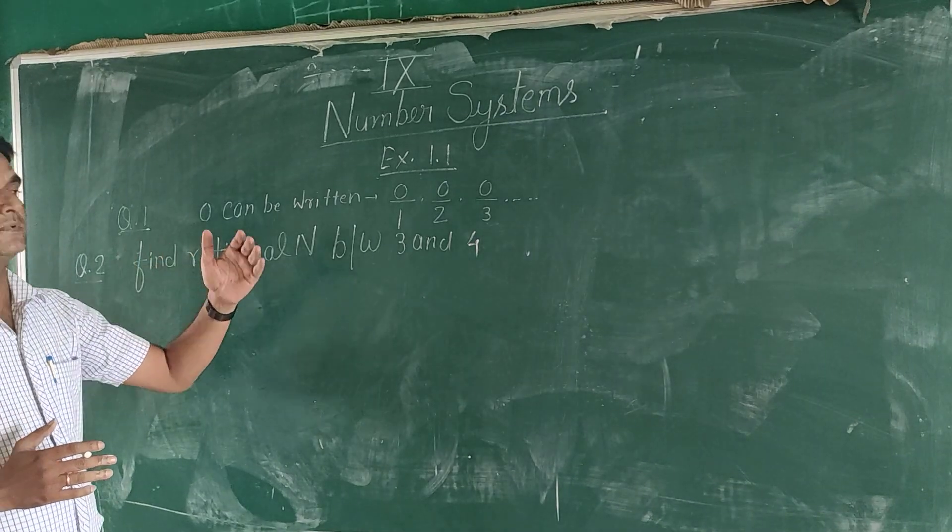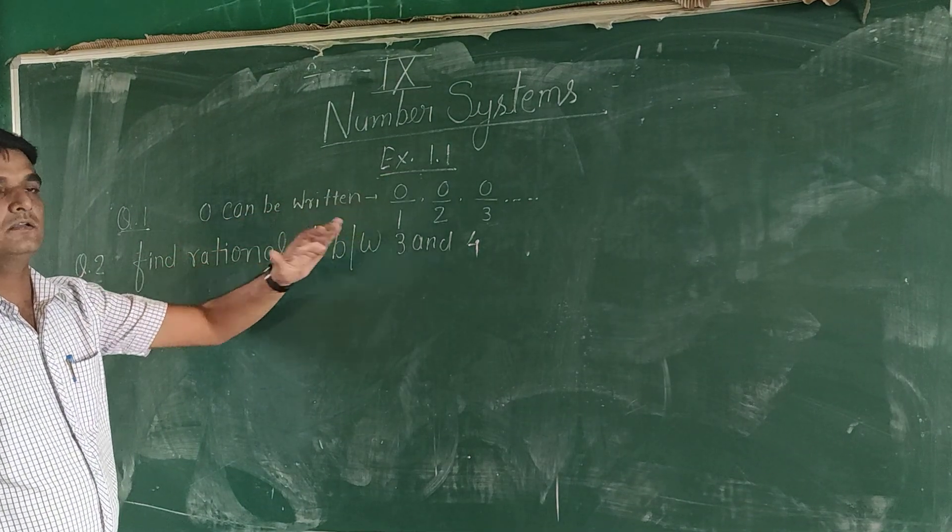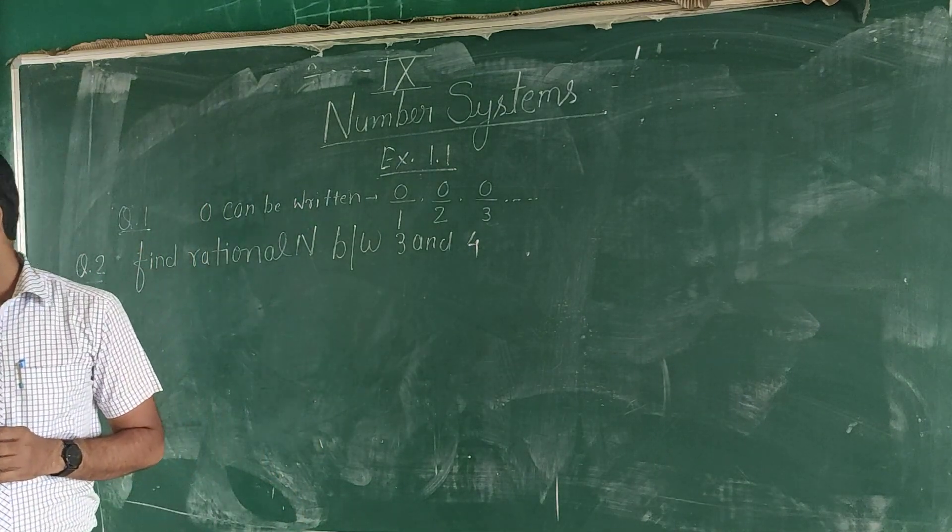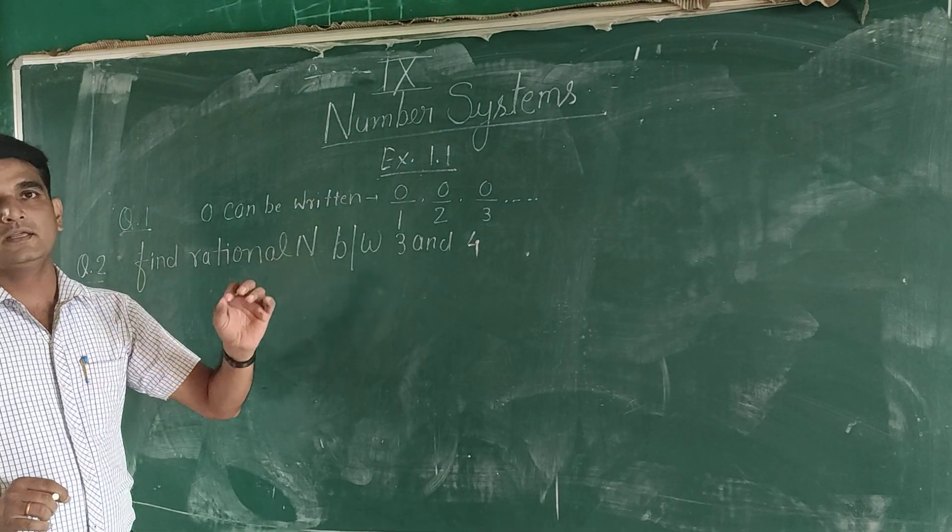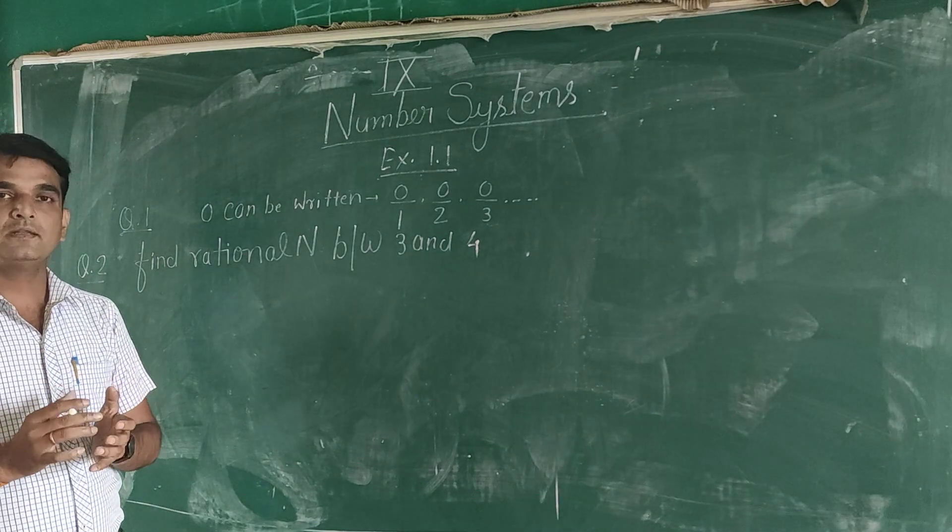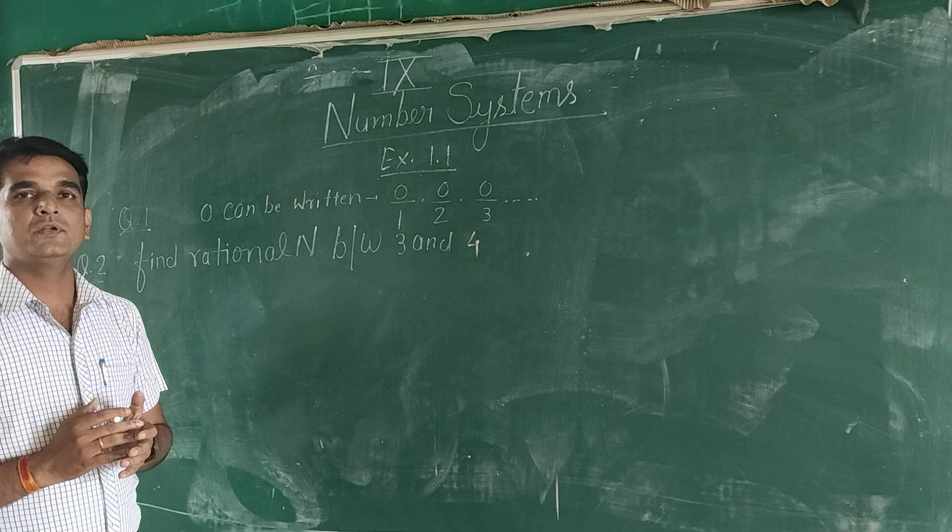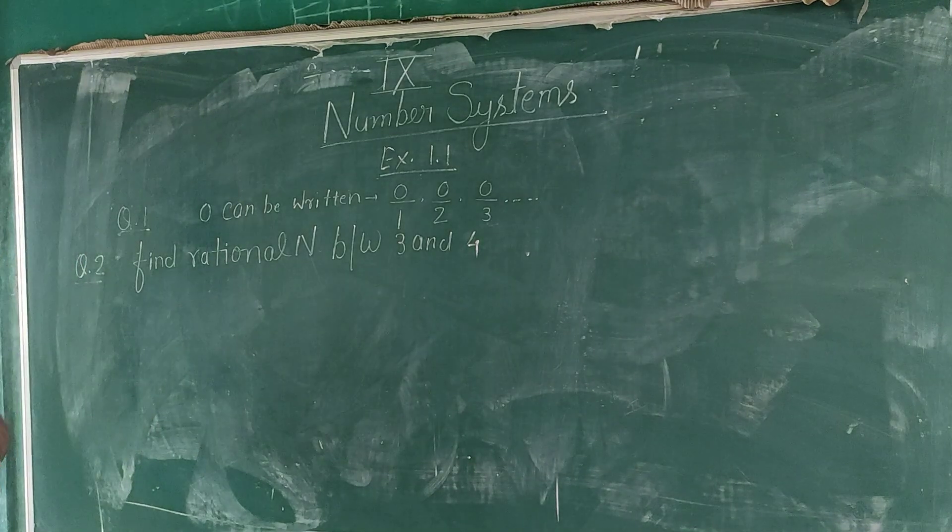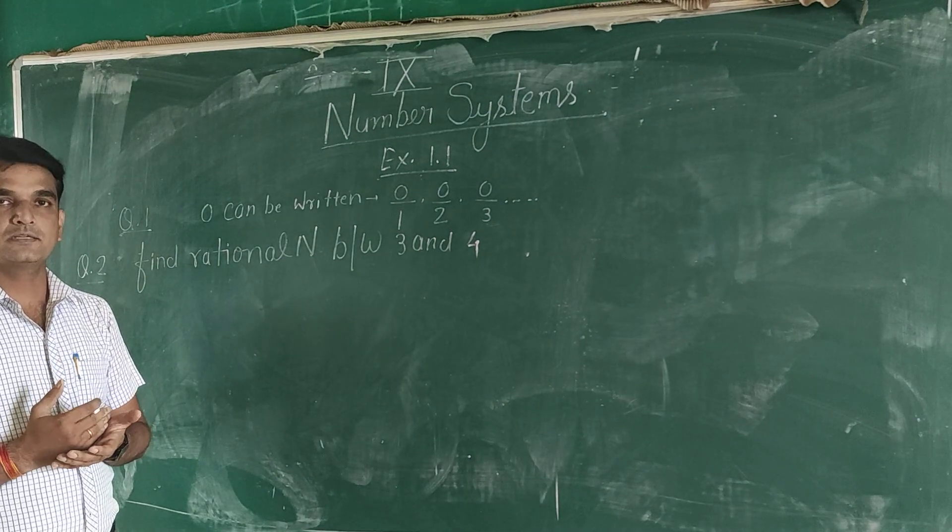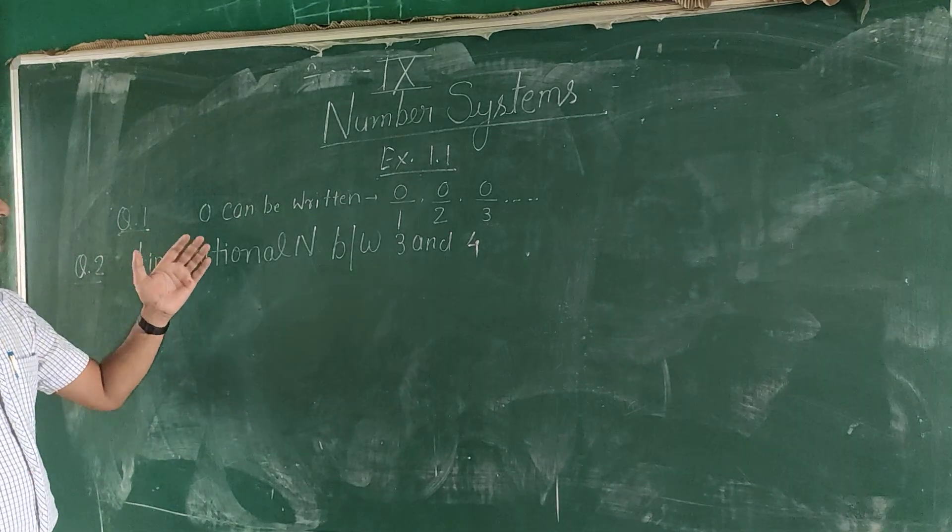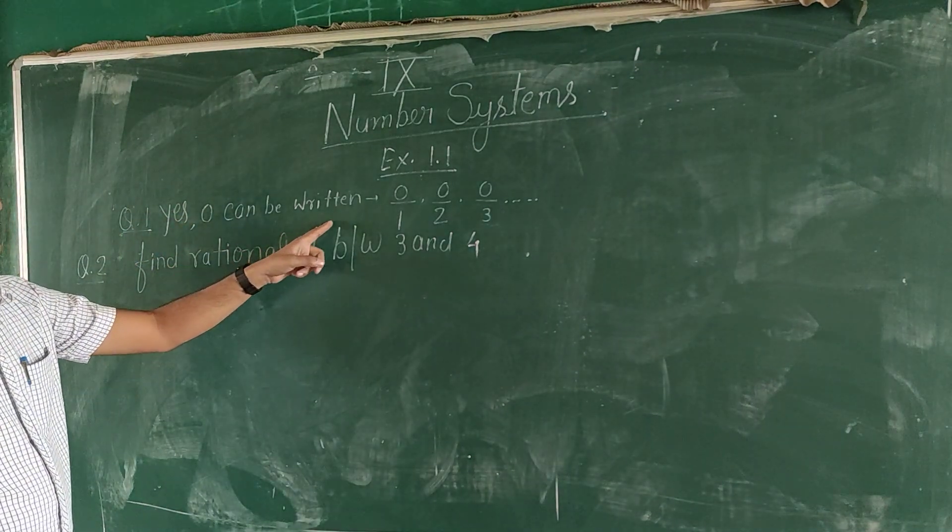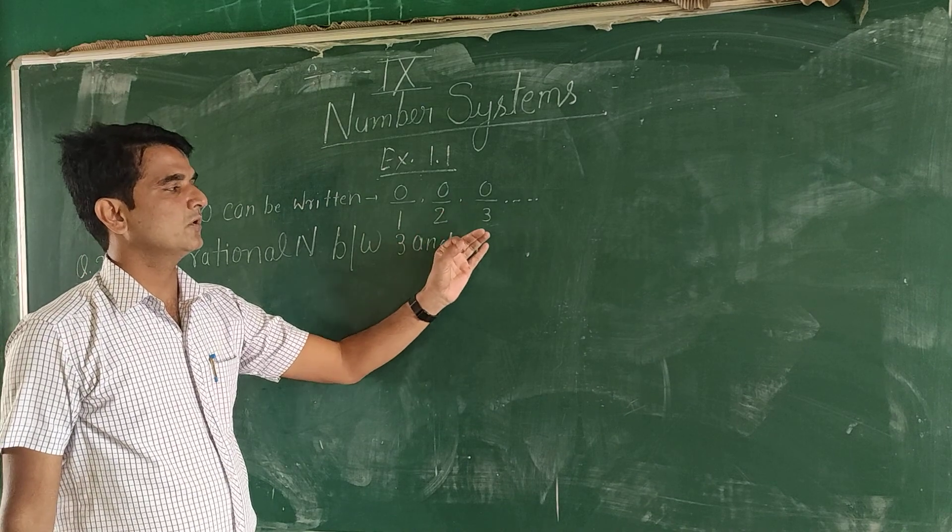Today, we are going to do the questions. Exercise 1.1, Question number 1. Is 0 a rational number? Can you write it in the form of p by q? The answer is yes. 0 is a rational number because we can write it in the form of p by q.